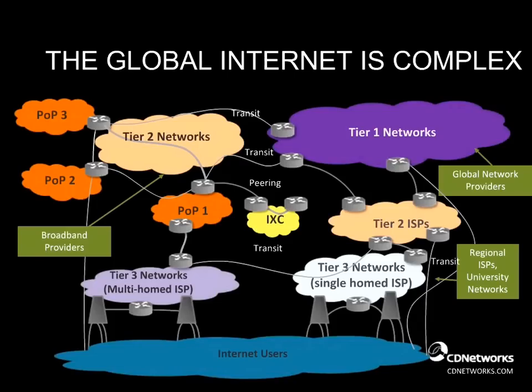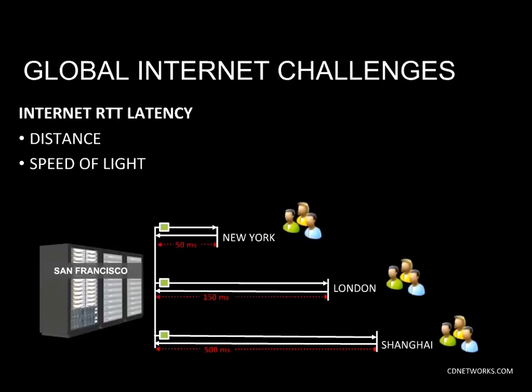As background, the Internet is a collection of private networks that are interconnected with each other — everything from big global Internet service providers, ISPs, like AT&T and Level 3, to regional and local ISPs. They all interconnect with each other and must speak the same language for content requests to traverse them. In most cases, content requests travel across multiple ISPs.